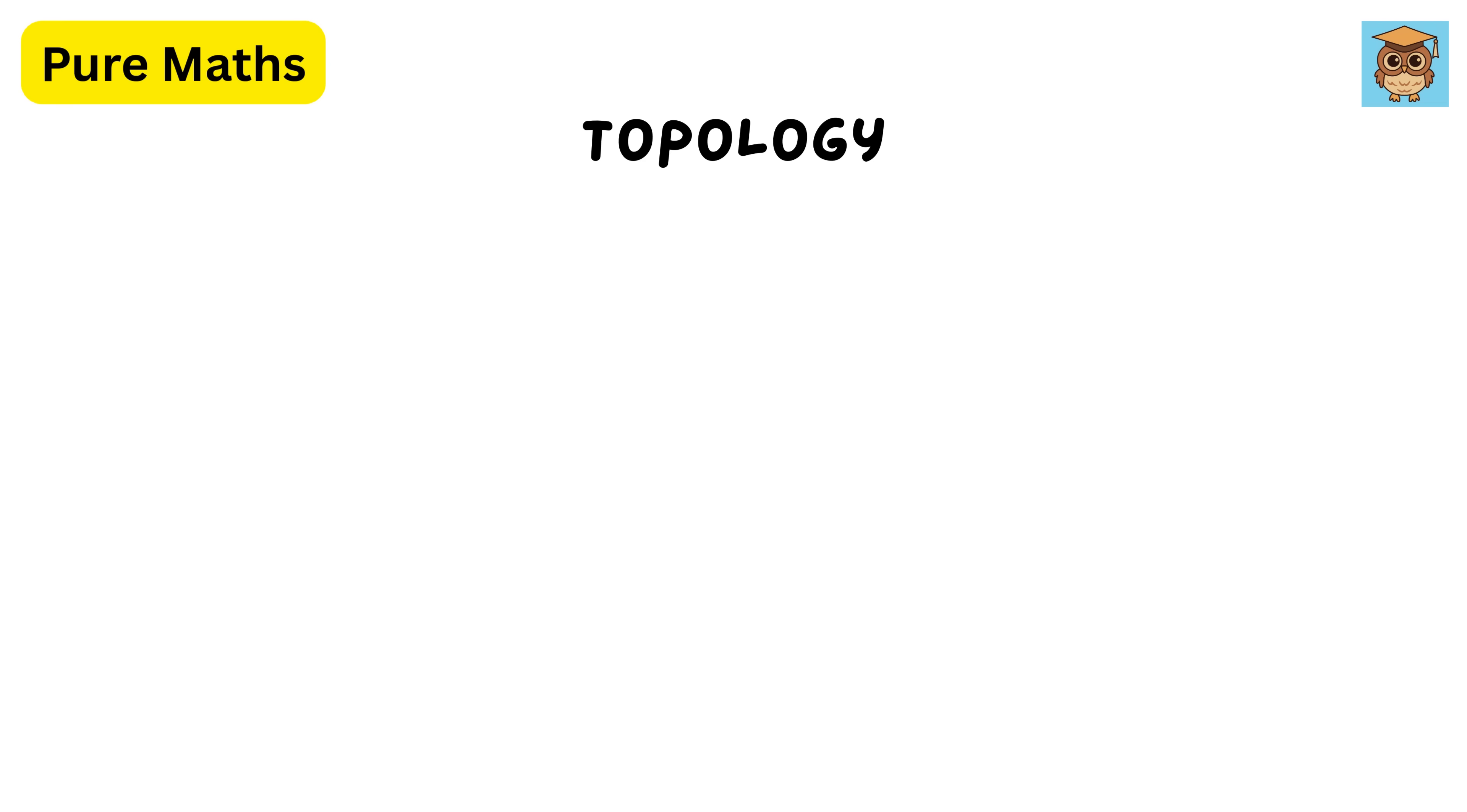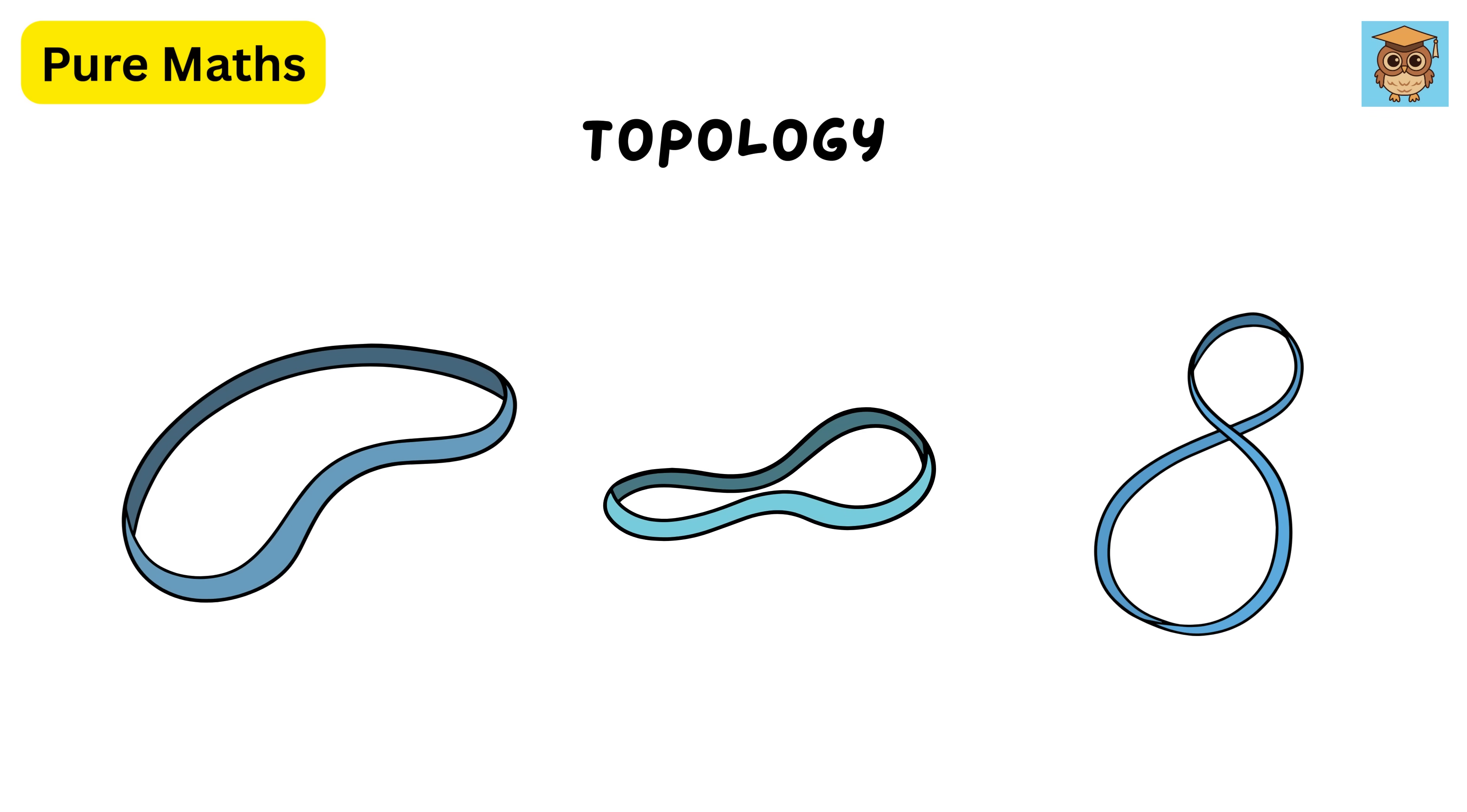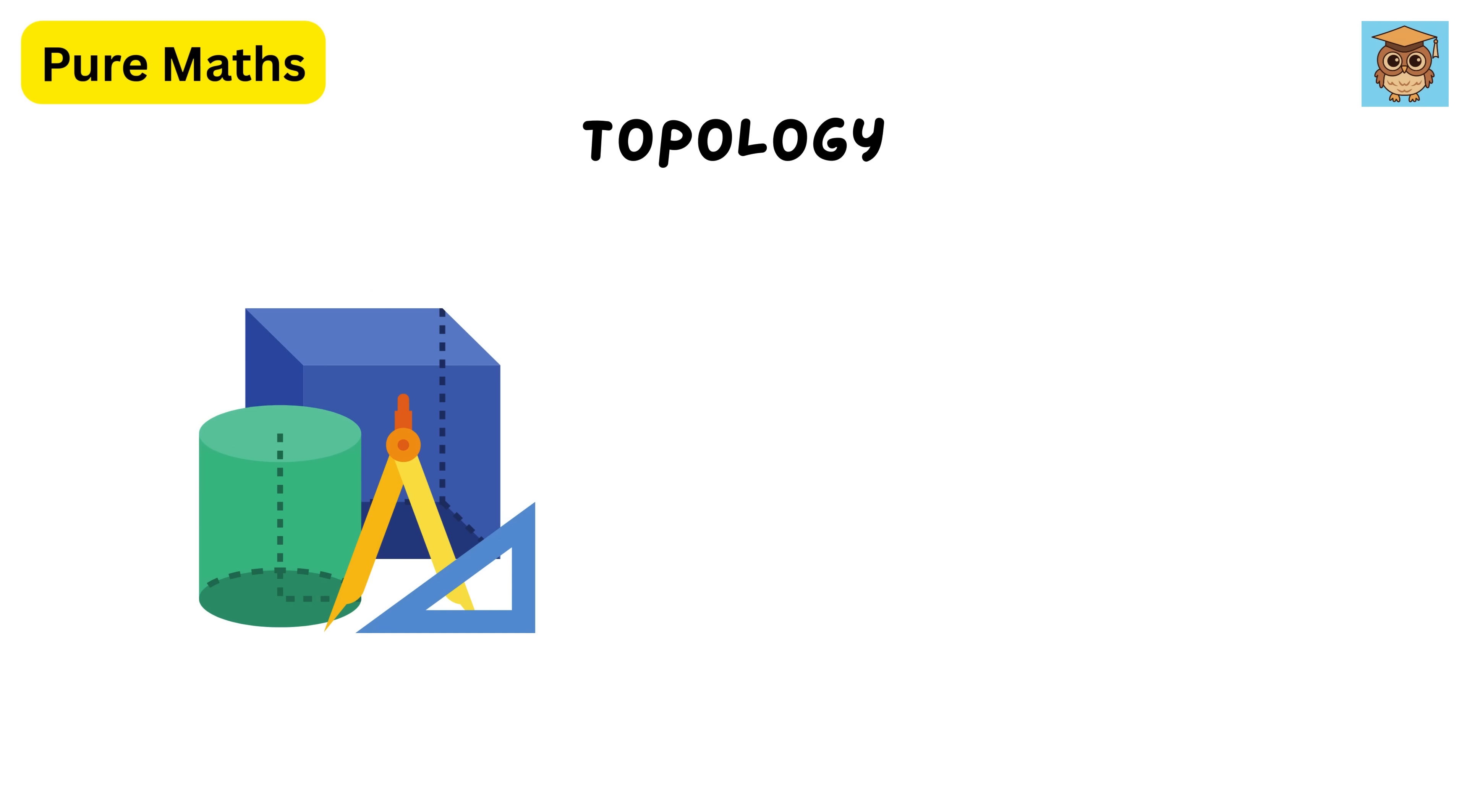Next up, we have topology. Imagine you have a rubber band and stretch it into different shapes without cutting it. It's still the same loop, right? While geometry cares about exact shapes, sizes, and measurements—